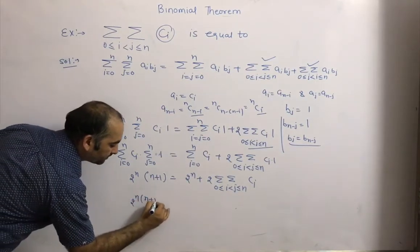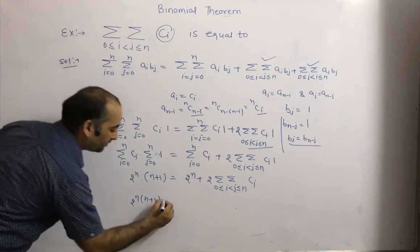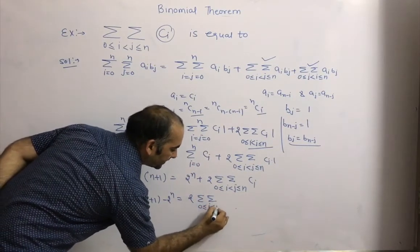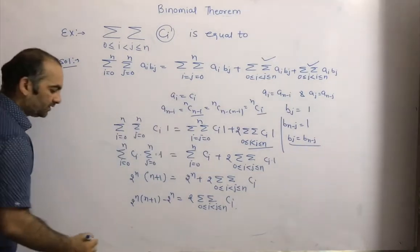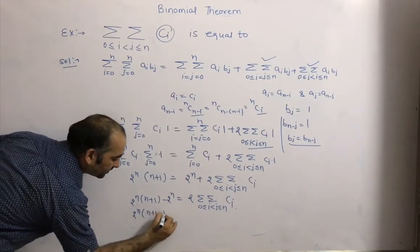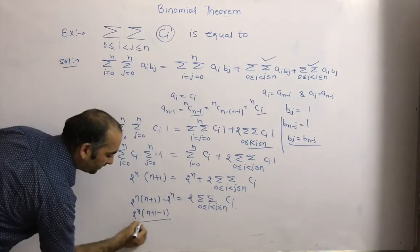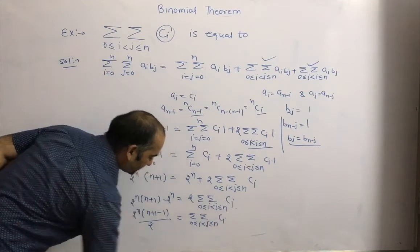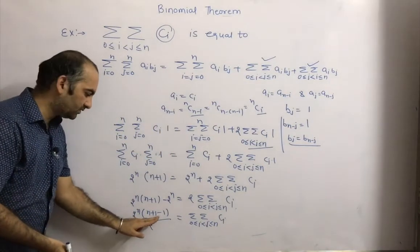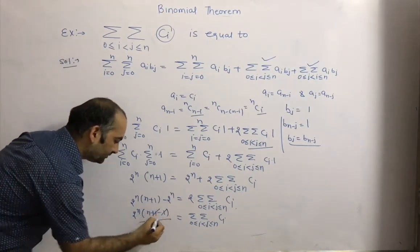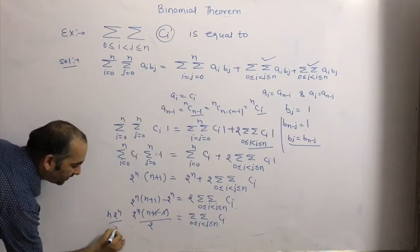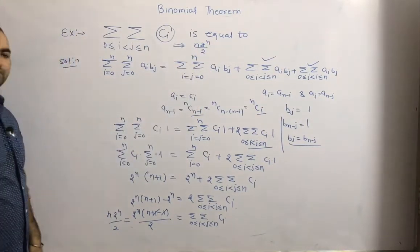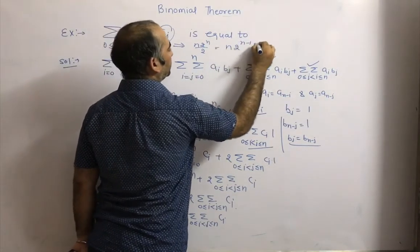Rearranging: 2^n·(n+1) - 2^n divided by 2 equals the double sigma. This simplifies to 2^n·n divided by 2, which equals n · 2^{n-1}. This is the answer for sigma sigma 0 ≤ i < j ≤ n of nCi.